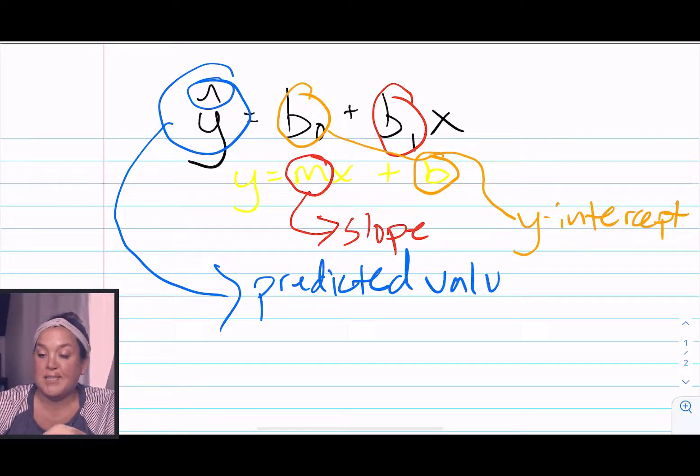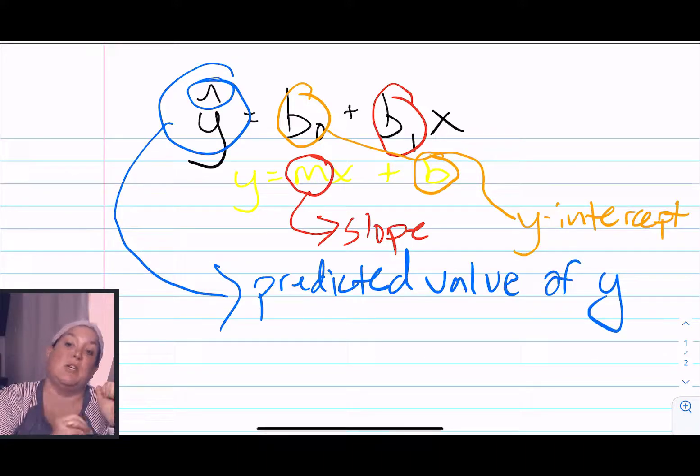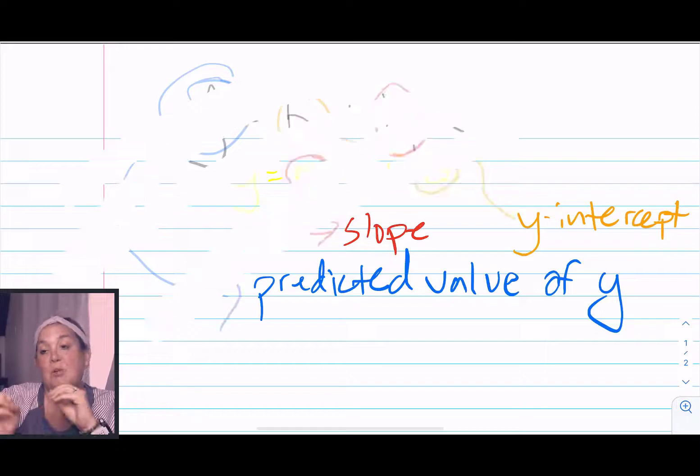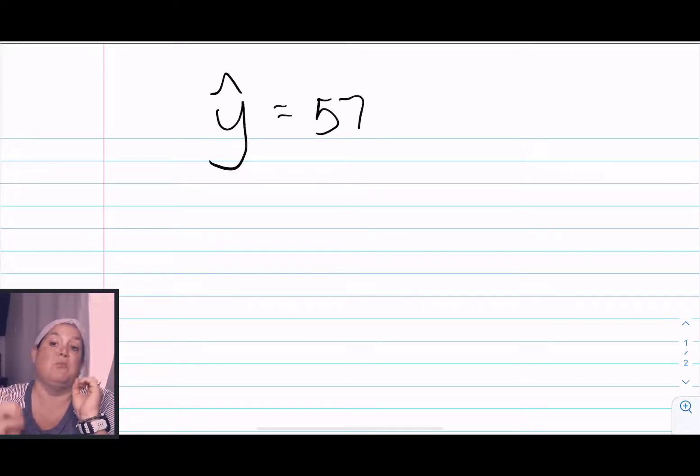Now one of the biggest things that's going to be a challenge for you is that in statistics y is the observed value, but this equation uses y hat because that's the predicted value of y. So that's important, that notation component y hat equals b sub zero plus b sub one x.